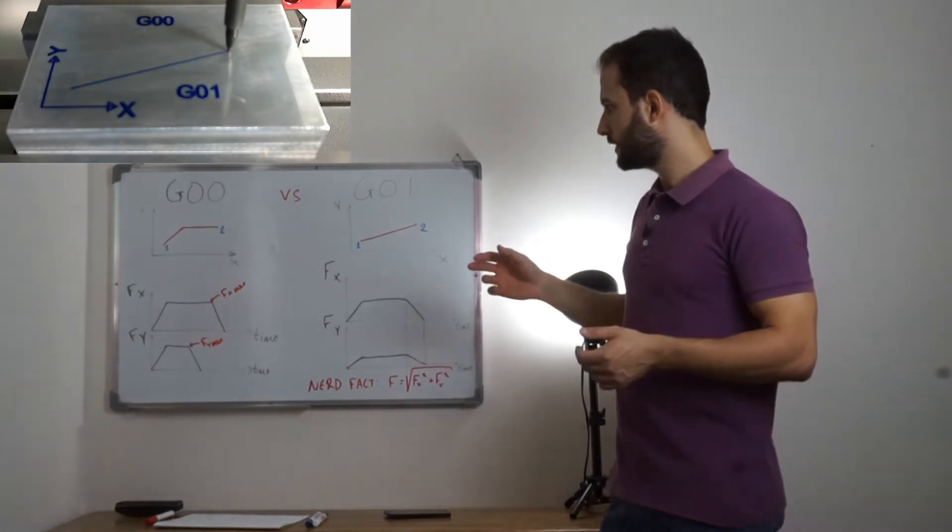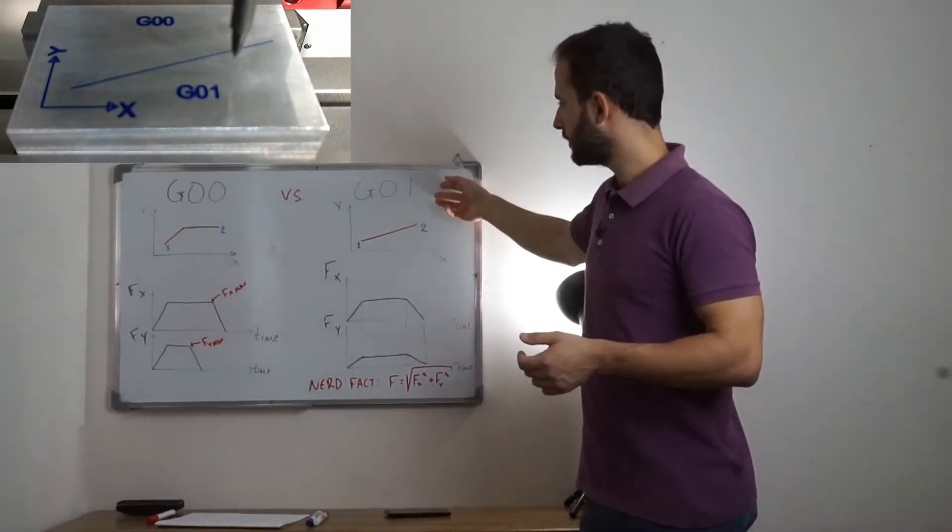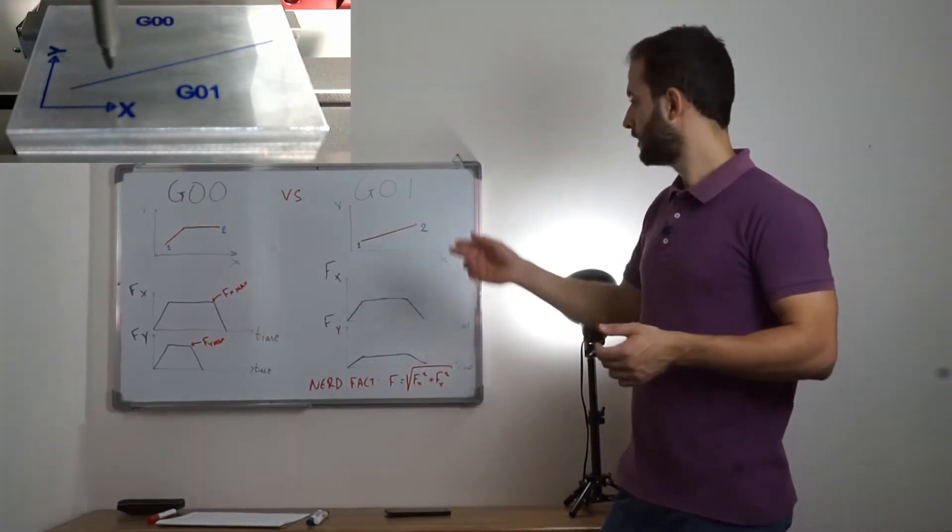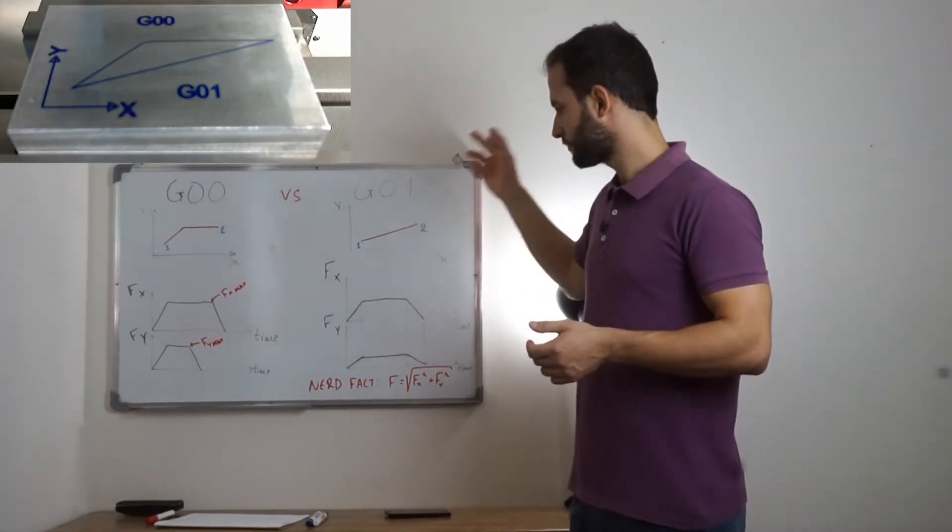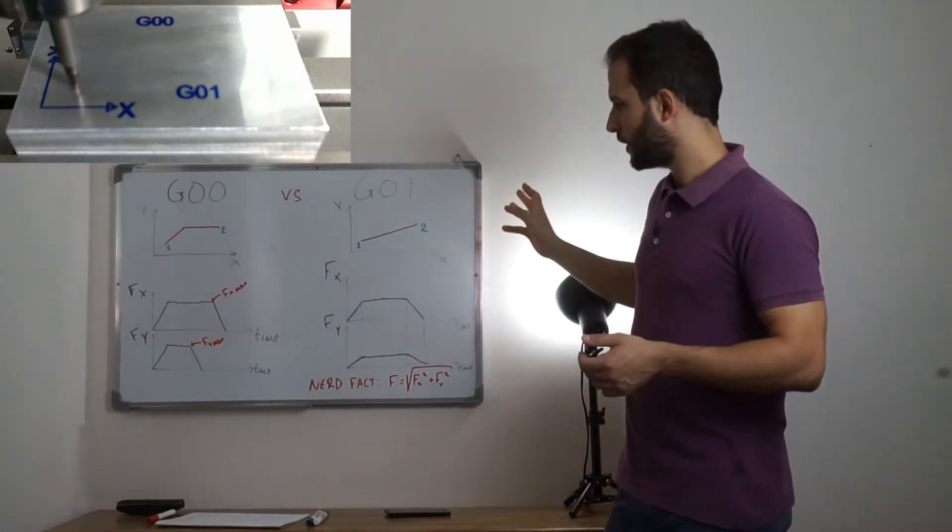On the other hand, when we program the same movement by using G1, the final result is a linear motion.